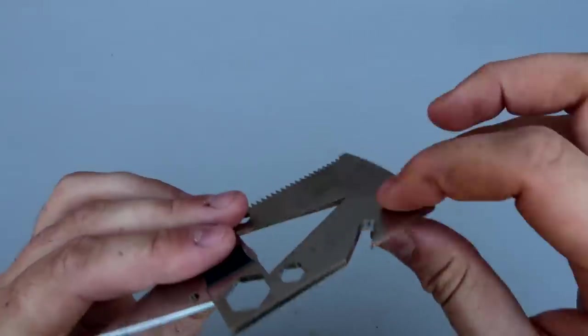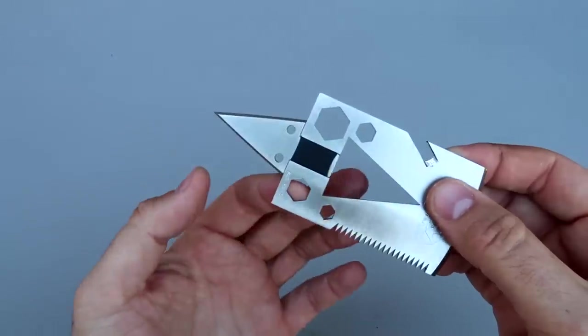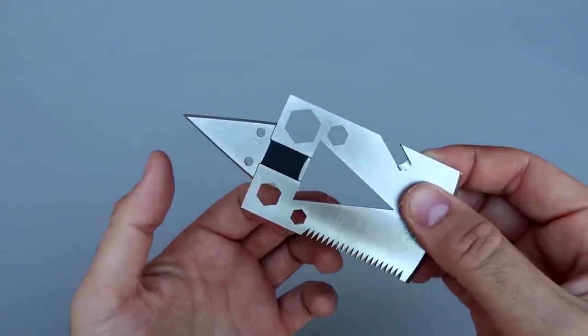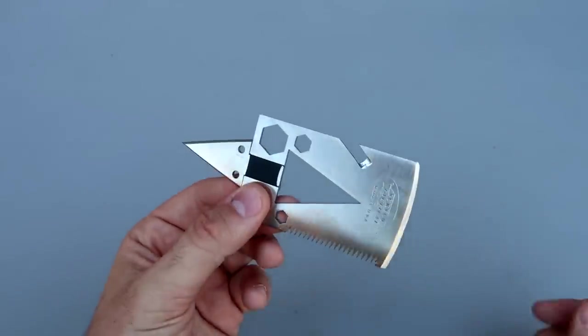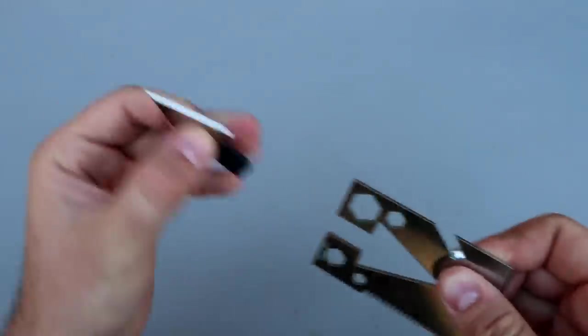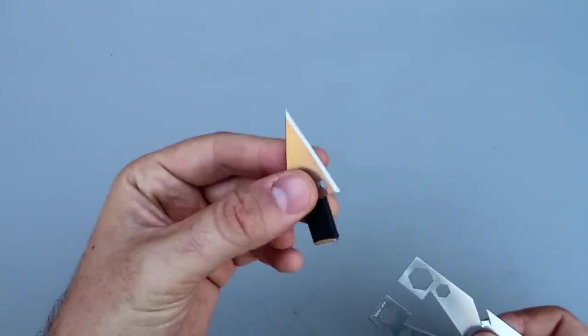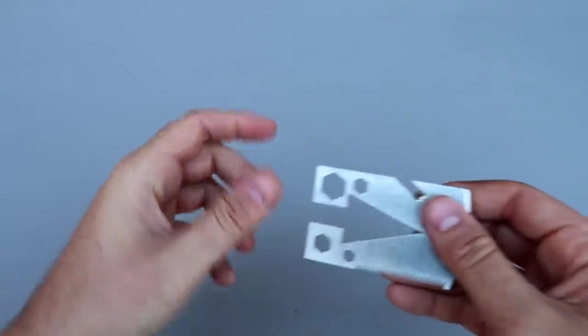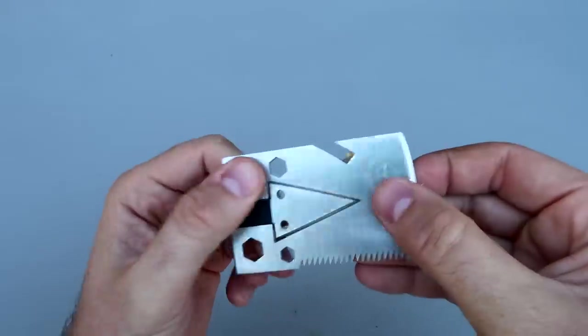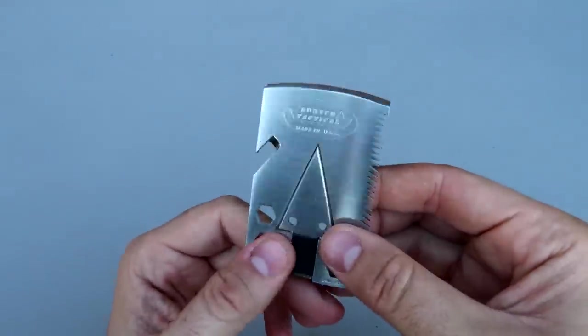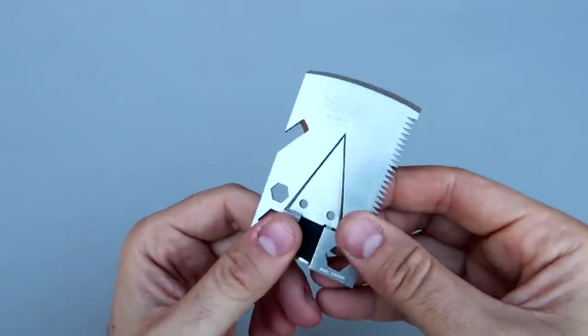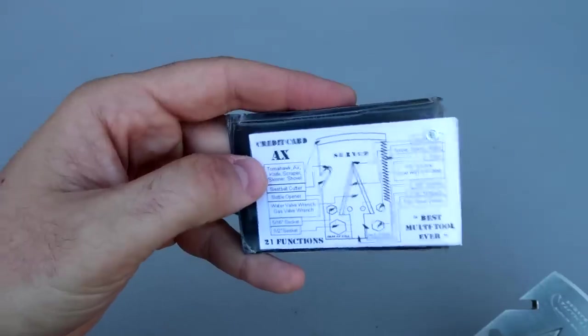Pretty interesting. There's a rope cutter and a couple of multi tools. I probably would never use that, but it's really cool. You can make a little makeshift arrow and war with that. I don't know how useful that is, but it's definitely unique. Credit card axe.